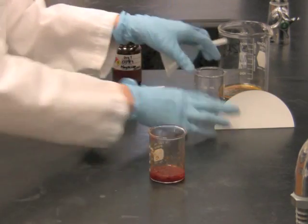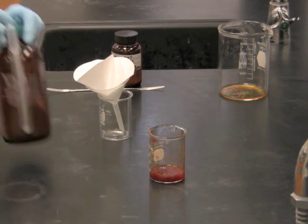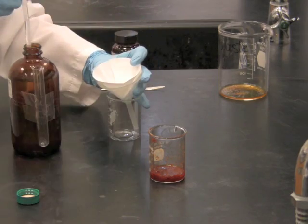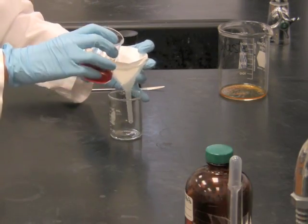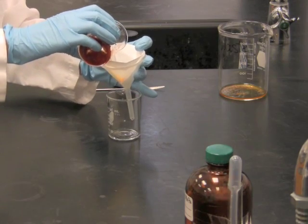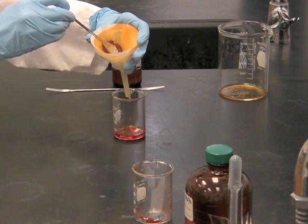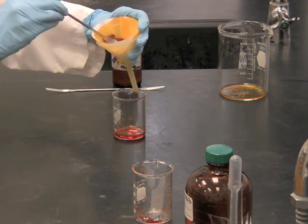Next, we're going to filter this solution into a clean, small beaker. I'm going to wet the filter paper with a little bit of the solvent. I'm just squeezing the tomato paste a little bit to get any extra liquid to come out and go through the filter paper.